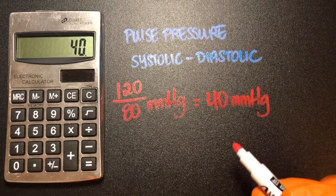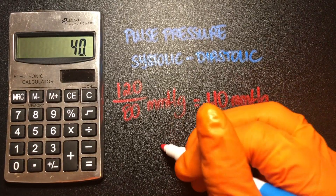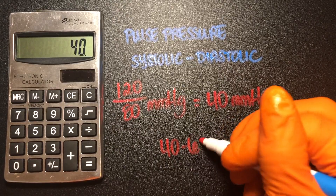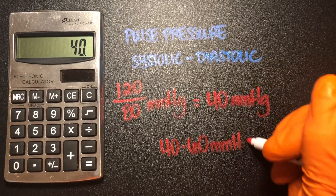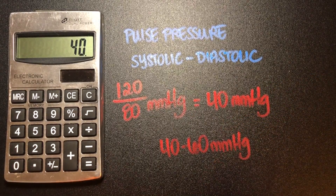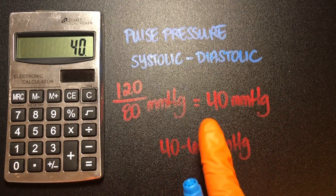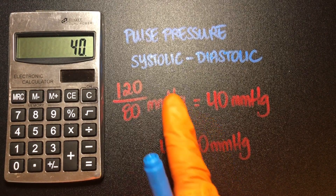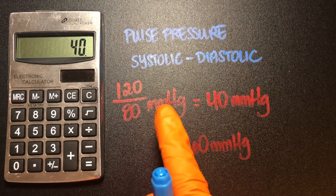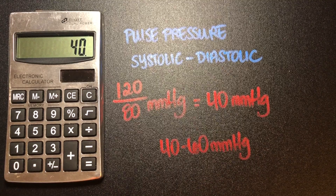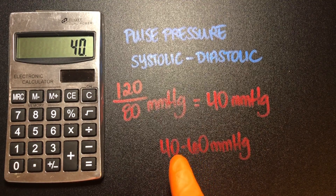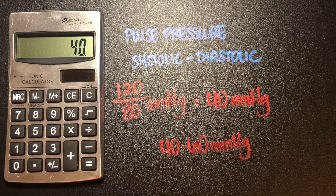A pulse pressure anywhere between 40 and 60 millimeters of mercury is considered normal. That is simply the difference between the stretch of the arteries and the relaxation of the arteries. So when you have to find a pulse pressure, it's a very straightforward calculation.